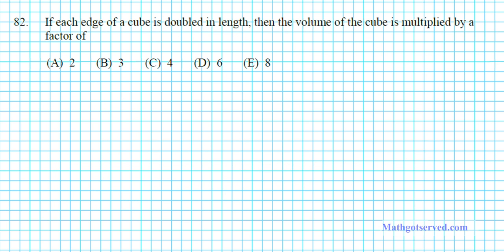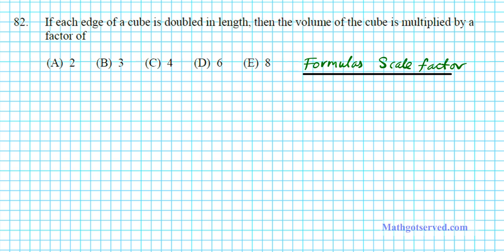Let's take a look at problem 82. It says if each edge of a cube is doubled in length, then the volume of the cube is multiplied by a factor of — before we do this let's look at the formulas for scale factor. Scale factoring is if you enlarge or diminish an object by a certain factor, how do the dimensions change? By what factor does the side or perimeter change, the area change, and the volume change?